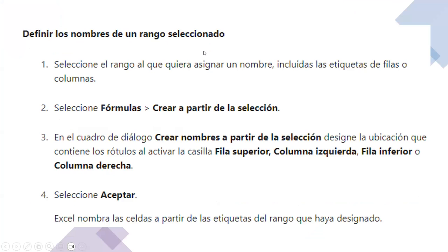Para definir los nombres de un rango seleccionado, lo primero es seleccionar el rango al que quiera asignar un nombre, incluidas las etiquetas de filas o columnas. En el cuadro de diálogo 'Crear nombres a partir de la selección', designe la ubicación que contiene los rótulos al activar la casilla fila superior, columna izquierda, fila inferior o columna derecha. Seleccione Aceptar. Excel nombra las celdas a partir de las etiquetas del rango que haya designado.